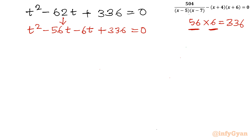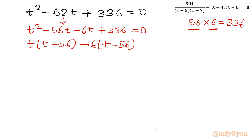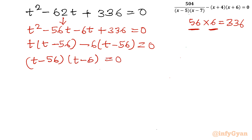Taking t common from the first two terms: t(t minus 56), and taking minus 6 common from the last two terms: minus 6(t minus 56) equal to 0. So (t minus 6)(t minus 56) equal to 0.